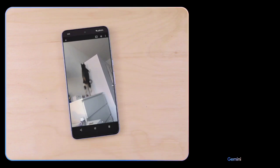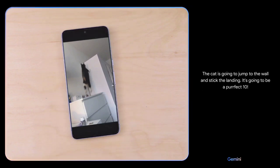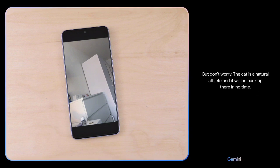What do you think might happen next? The cat is going to jump to the wall and stick the landing. It's going to be a perfect 10. Oh, and it's a miss. It looks like it was just a little too far away. But don't worry. The cat is a natural athlete and it will be back up there in no time.